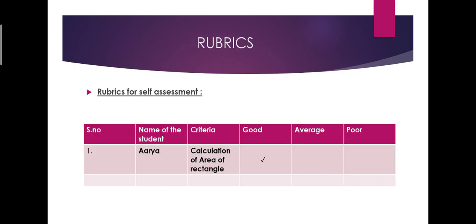Then rubrics. Rubrics for self-assessment. Under these, five columns are there: serial number, name of the student, criteria, good, average, poor. Here the name of the student is Arya. Criteria is calculation of area of rectangle. Here her calculation is good. That's why she put a checkmark under good. Like that, each and every student, they have to assess their own work.